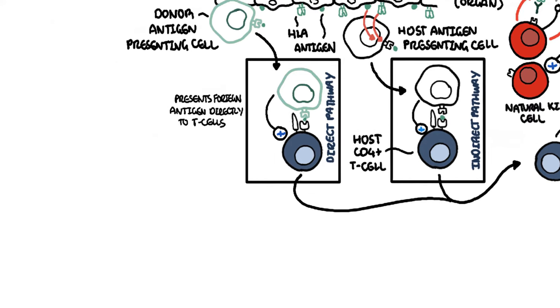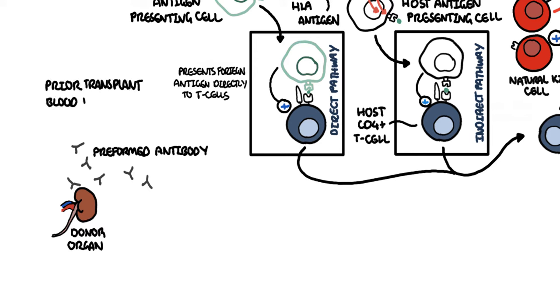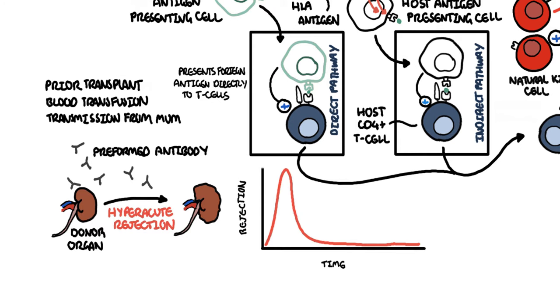Antibody-mediated rejection can be divided into hyperacute, acute, and chronic. So what are the differences? Hyperacute rejection occurs due to preformed donor-specific antibodies, present in high amounts before transplantation even occurs. Donor-specific antibodies are formed if a person has had a prior transplant, blood transfusion, or because of transmission from the mum. Hyperacute rejection presents as graft rejection within minutes to hours after transplantation. Now it's rare thanks to better HLA matching and ABO compatibility.